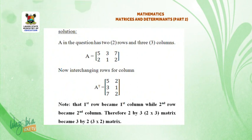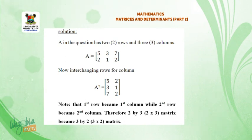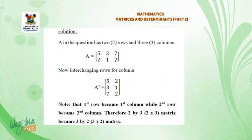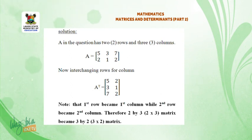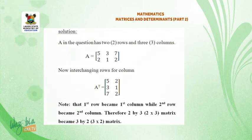A in the question has 2 rows and 3 columns. A is equal to the matrix: 5, 3, 7, 2, 1, 2. Now, interchanging rows for columns, A transpose is equal to the matrix: 5, 2, 3, 1, 7, 2. Note that the first row became the first column, while the second row became the second column. Therefore, the 2×3 matrix became a 3×2 matrix.